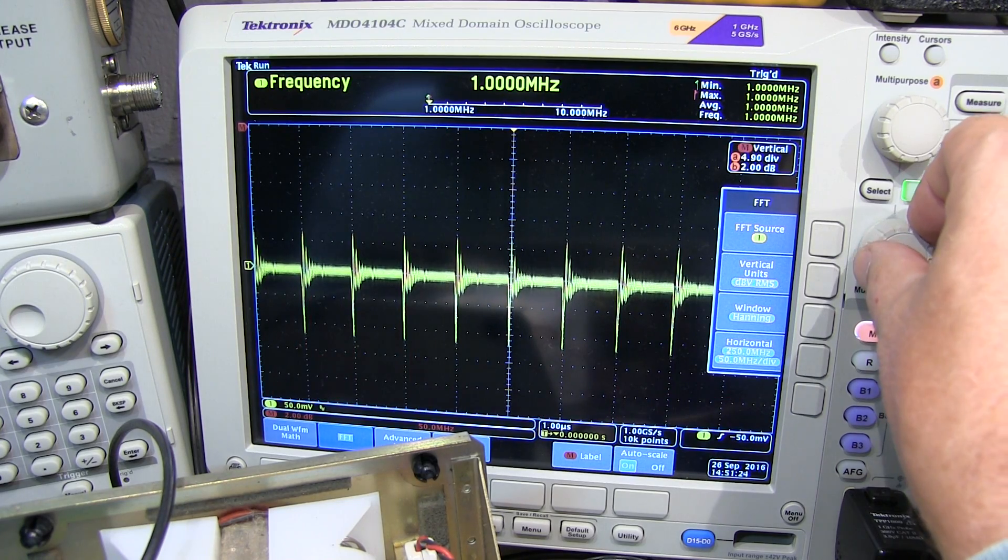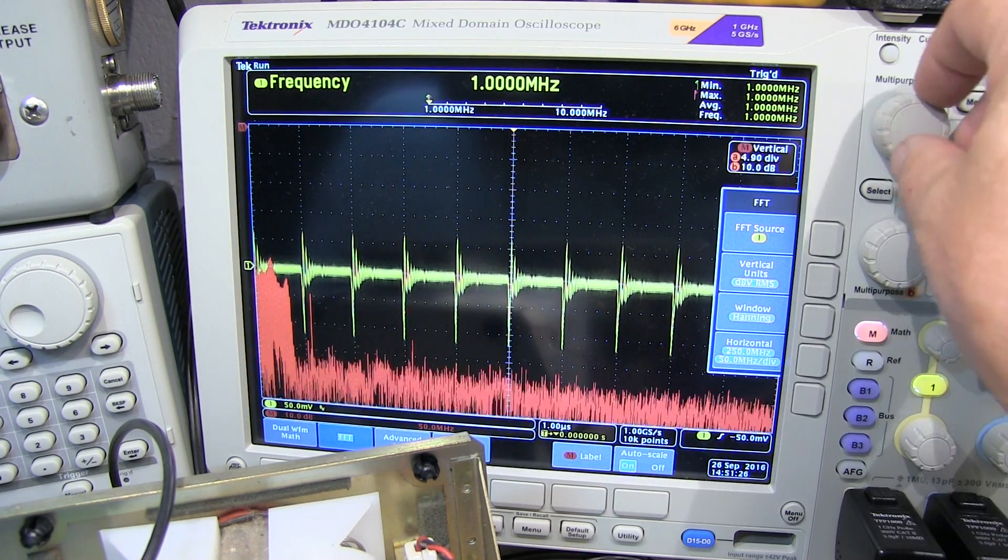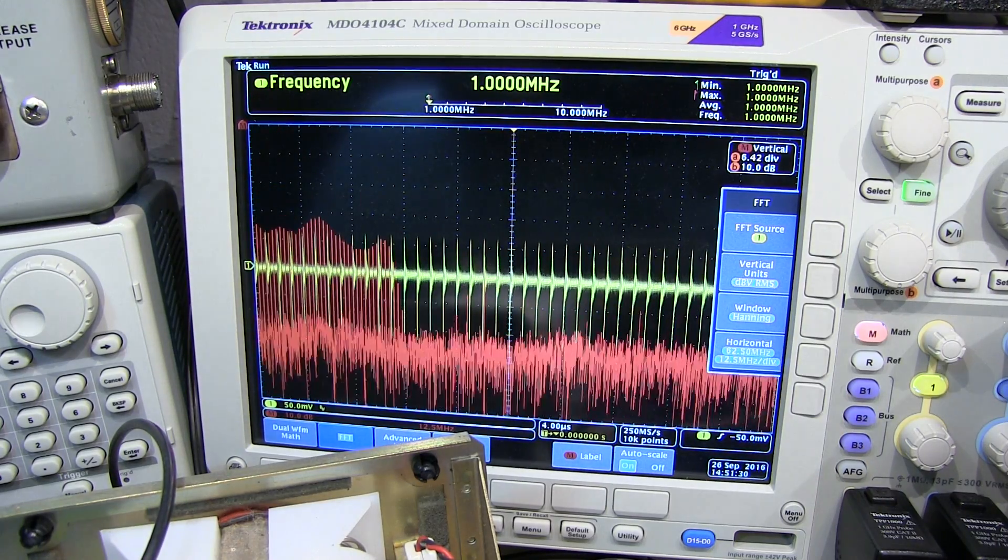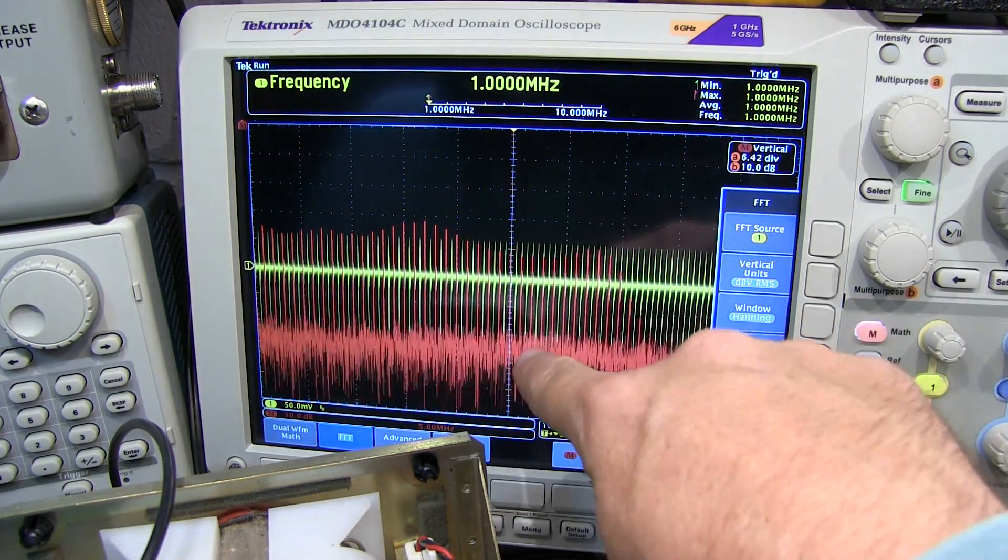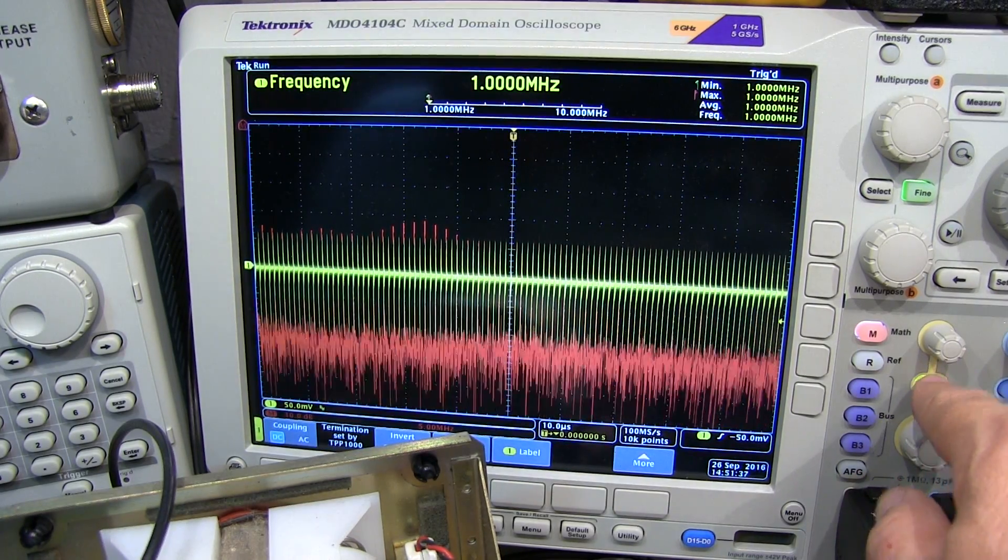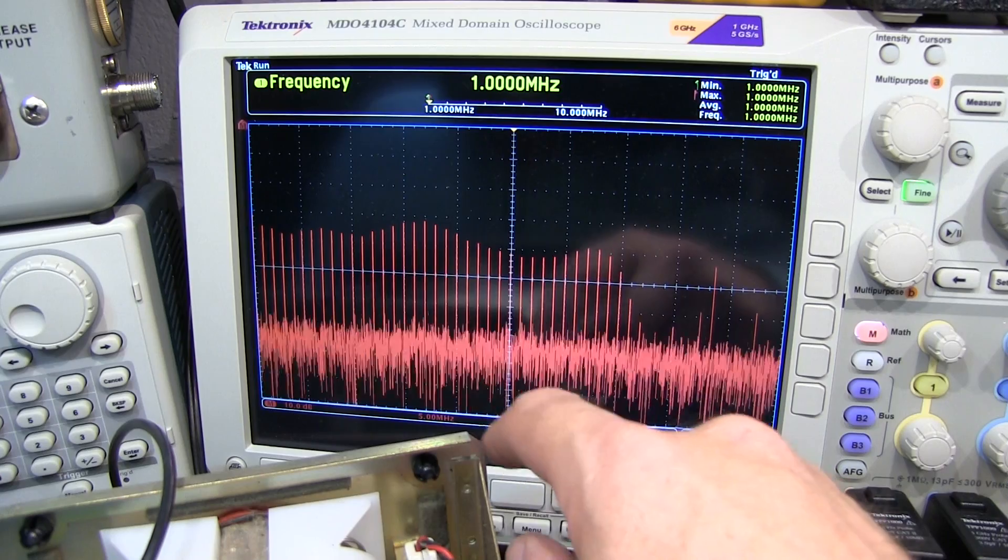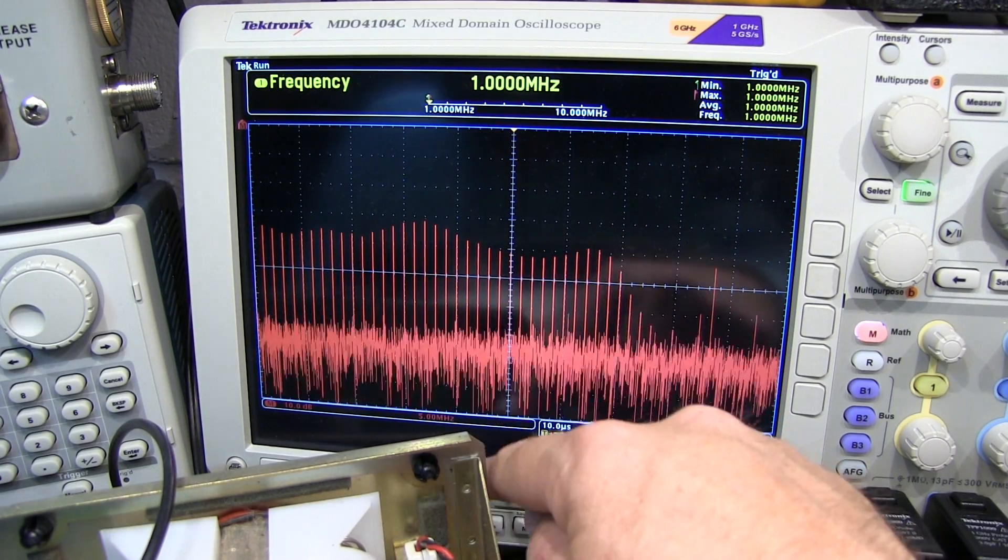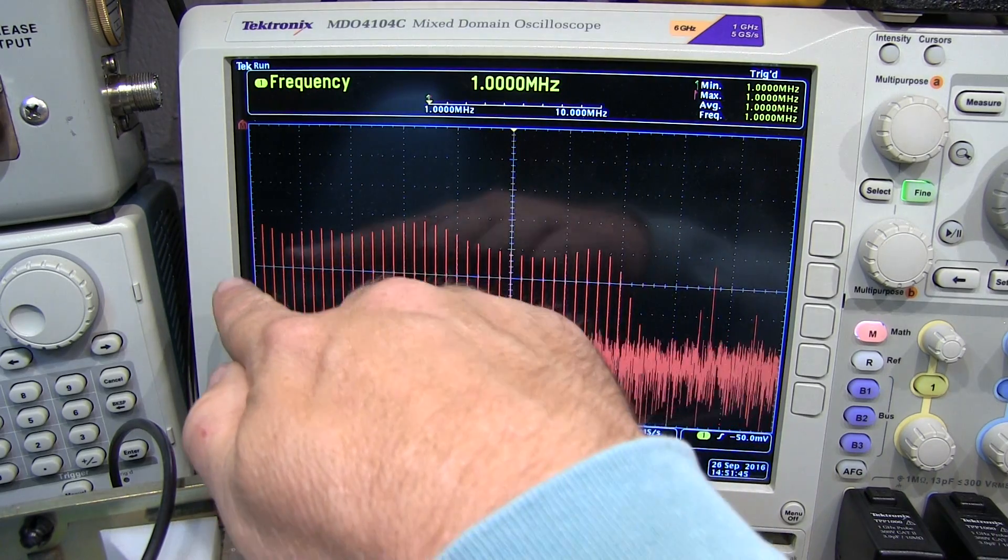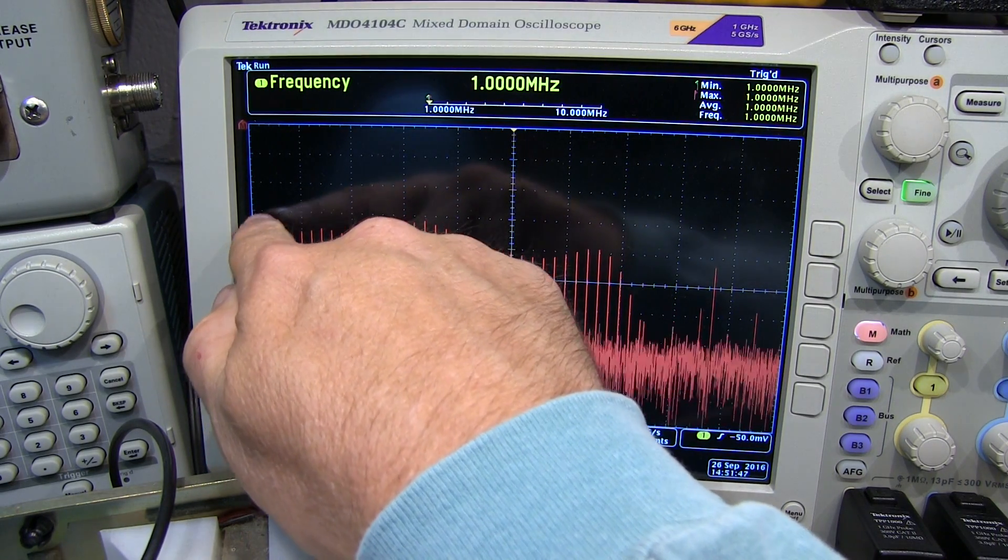And let's expand the scale of that a little bit. Let's go 10 dB division. Expand this up vertically. And I'm going to change my time scale to change the frequency range of the FFT. And let's turn off channel 1 just so we can kind of see what's going on here.